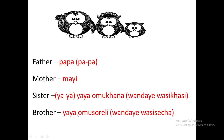For brother, we say 'yaya omusoreli'. Again, 'yaya' refers to the sibling, and 'omusoreli' means a boy or male. When you're talking about your own brother, you say 'yaya omusoreli'. When someone else is talking about your brother, they will refer to them as 'wandae wasihasi', meaning his or her brother. So 'wandae' means a sibling who is male.